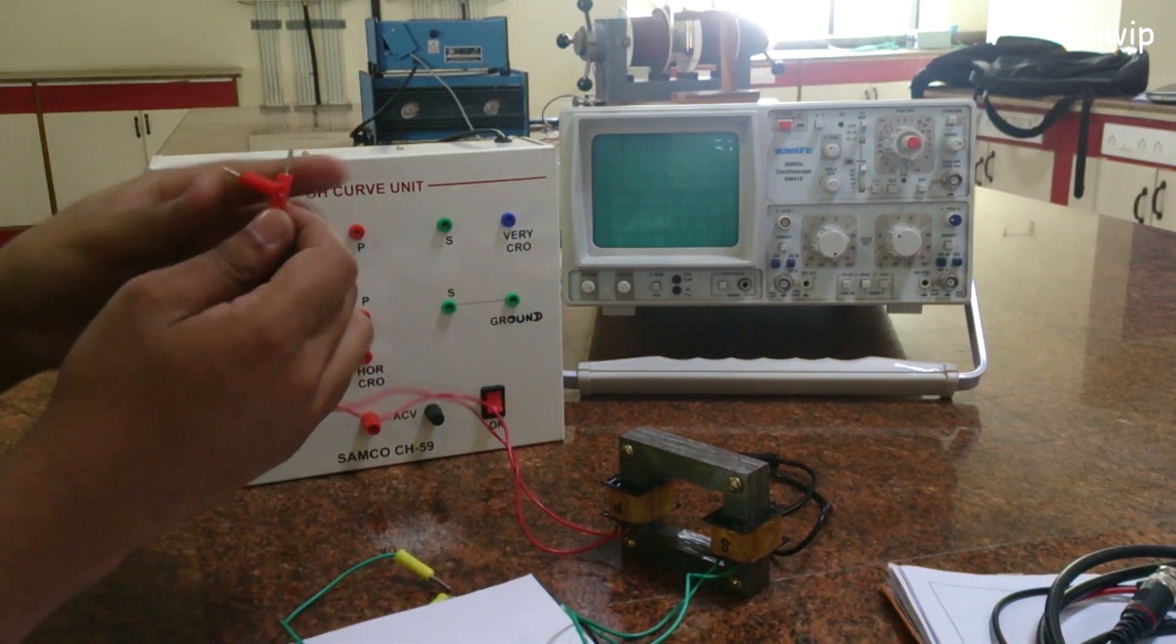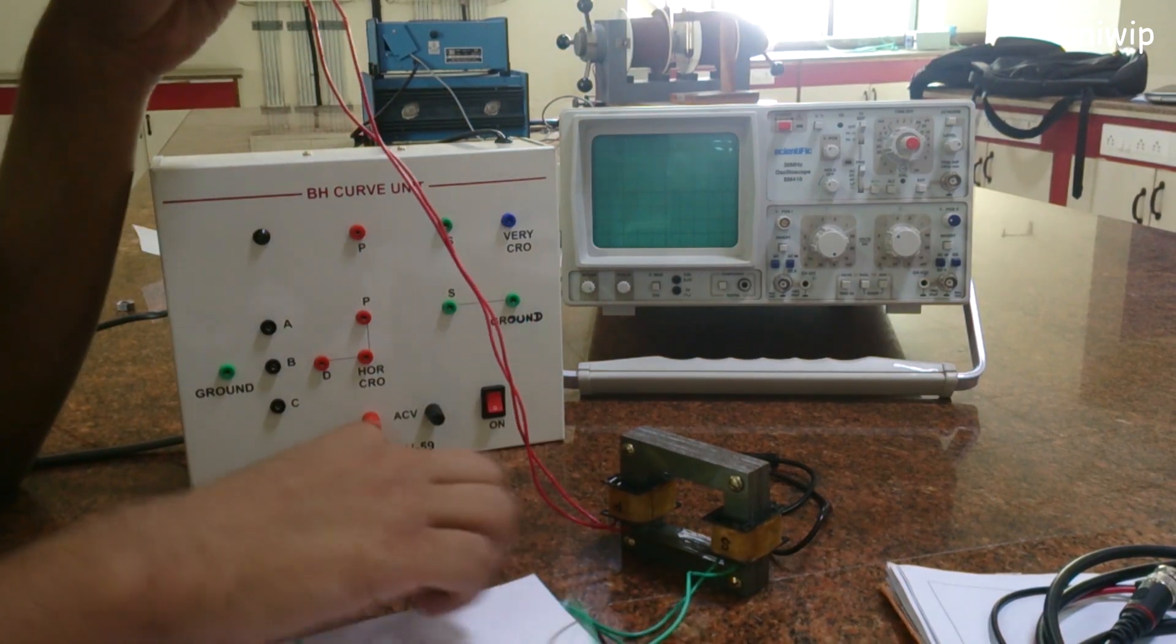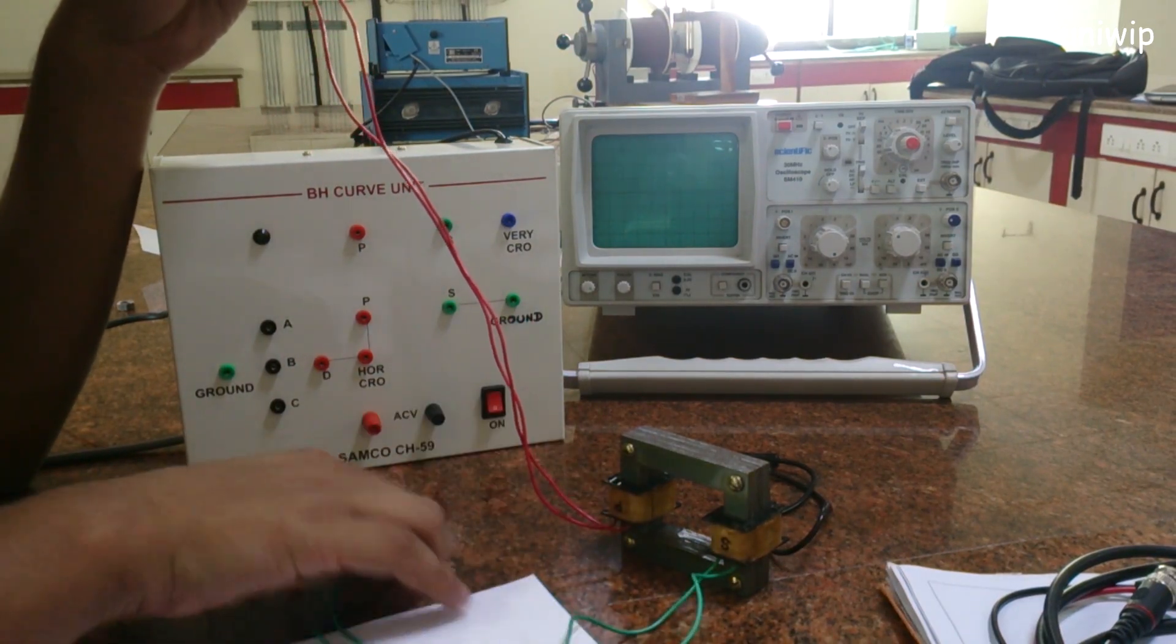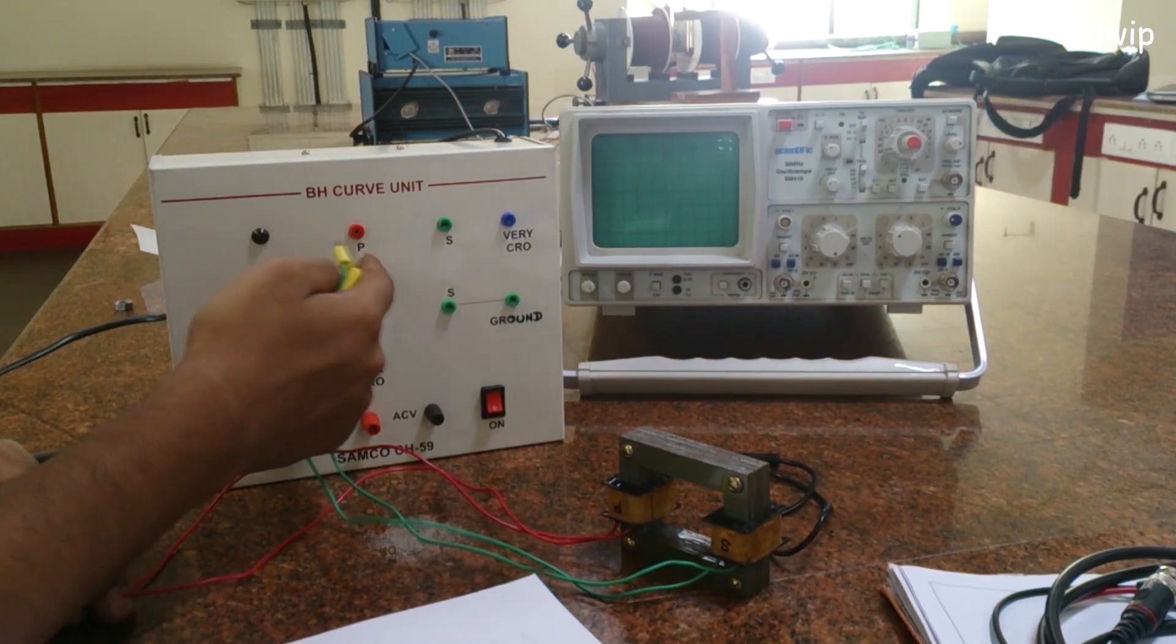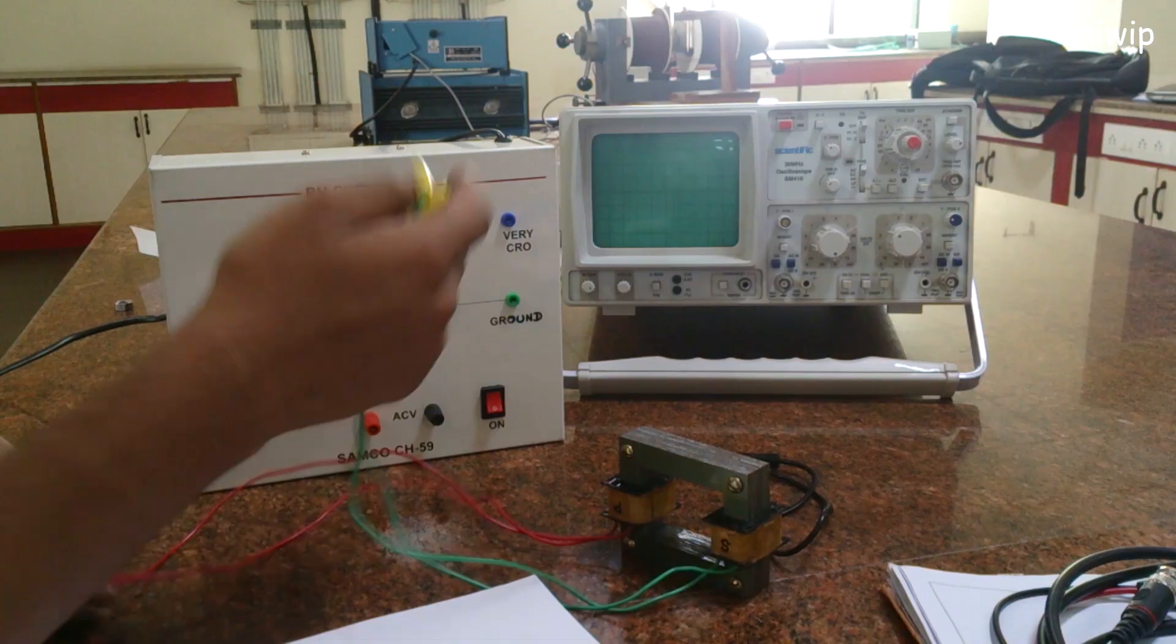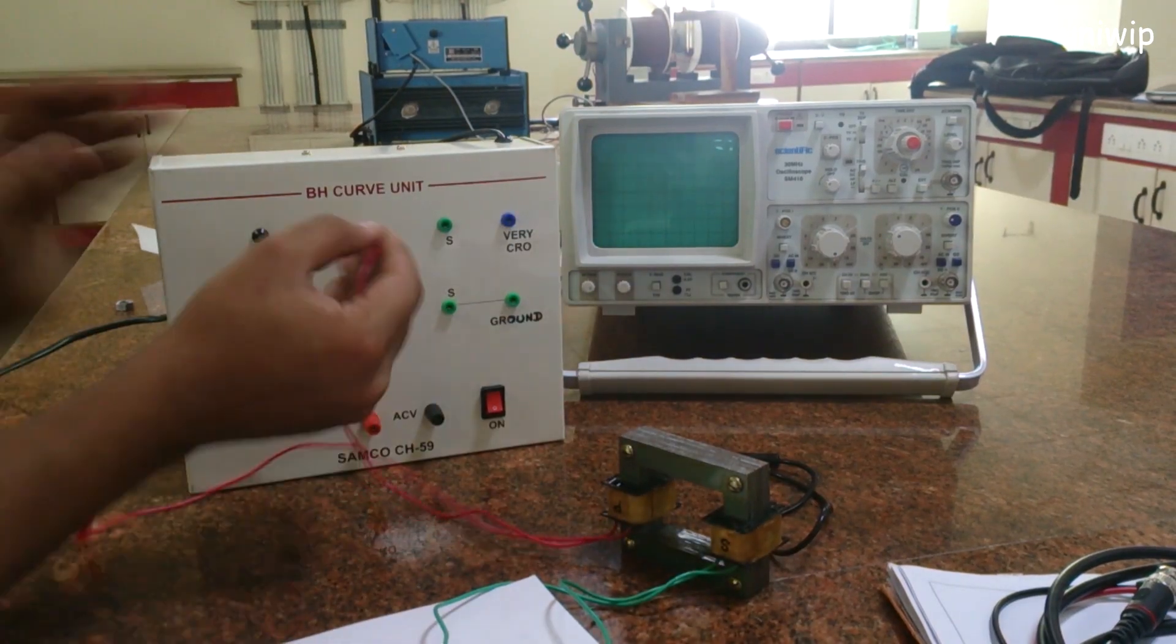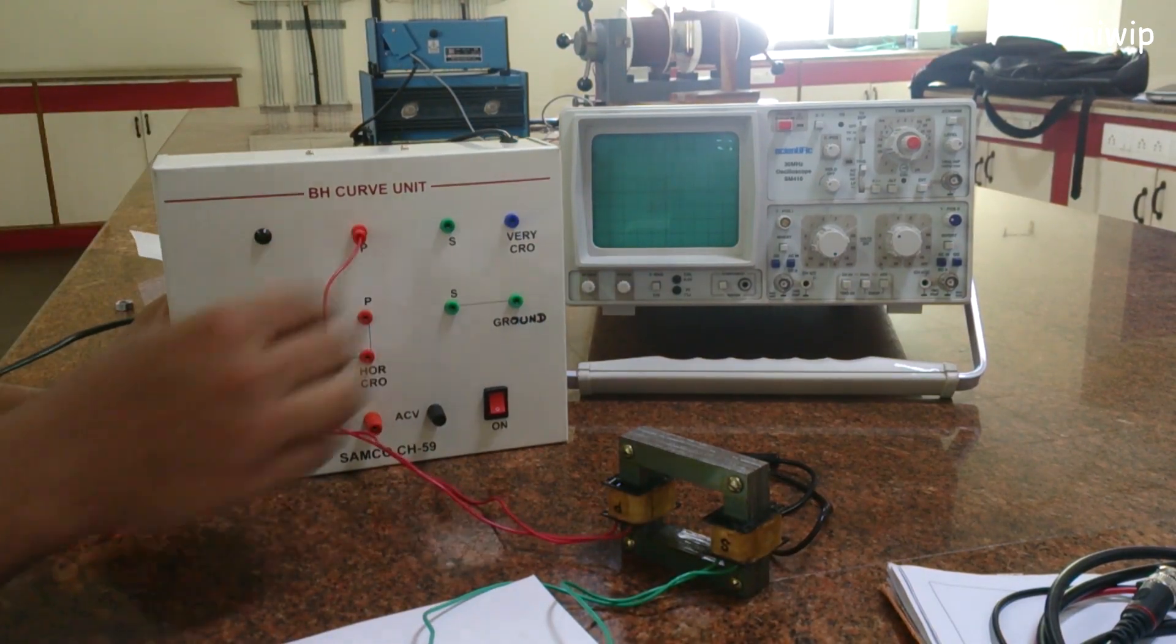At first, the primary coil - as we know transformer has two different coils, primary coils and a secondary coil. As you see in the BH curve unit we have PP and SS. P stands for primary and S stands for secondary. So you put the primary inside primary, put the red inside the red.